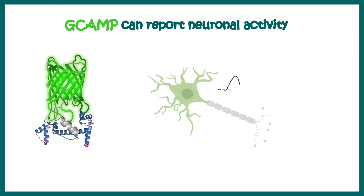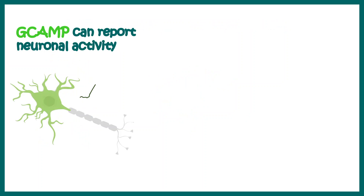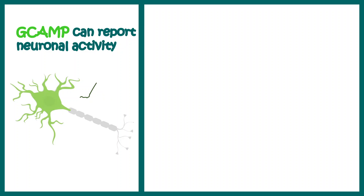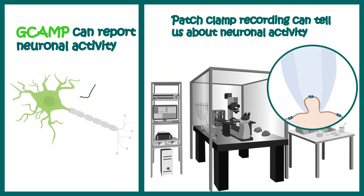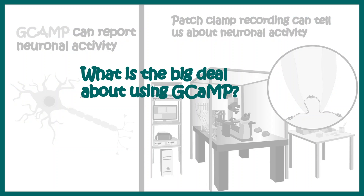GCaMP can fruitfully report calcium fluctuations inside the neuron, and calcium fluctuations can work as a proxy of neuronal activity. So GCaMP can reproducibly report neuronal activity. But neuronal activity could already be recorded using patch clamp technique, reported several decades ago, so what is the added advantage of GCaMP?